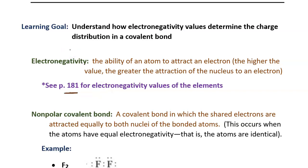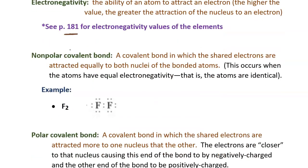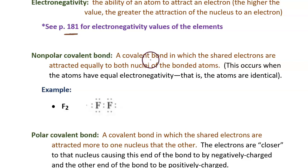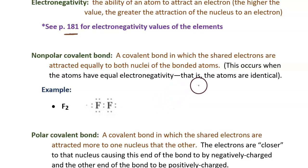Let's see how electronegativity is connected to covalent bonds. There is a type of covalent bond called a nonpolar covalent bond. This is a covalent bond in which the shared electrons are attracted equally to both nuclei of the bonded atoms. This would occur when the atoms have equal electronegativity — that is, when the atoms are identical.